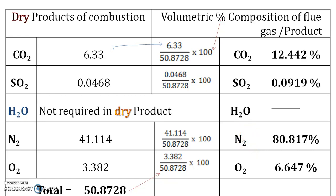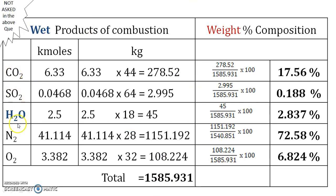If you are asked for weight percent composition instead of volumetric percent, you need to find the weight of the products. In that case, water must also be included — that is, the amount of water obtained is also required to be considered. You convert each individual component into its weight by multiplying by the respective molecular weight.